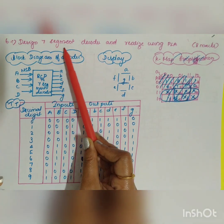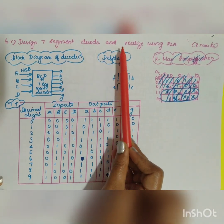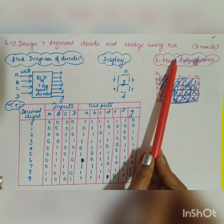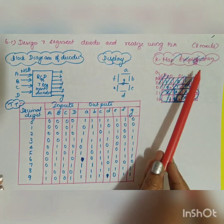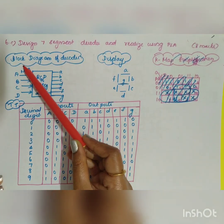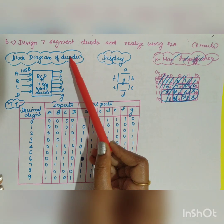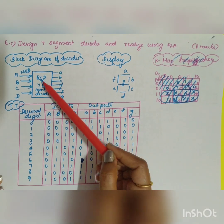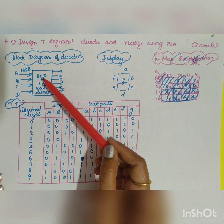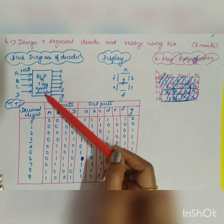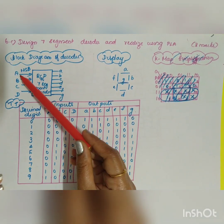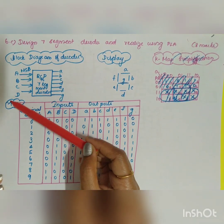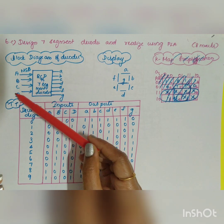The next question is to design a seven-segment decoder and realize it using PLA, asked for eight marks. The block diagram of the decoder is given by BCD to seven-segment decoder. The input is equal to A, B, C, D — four inputs.